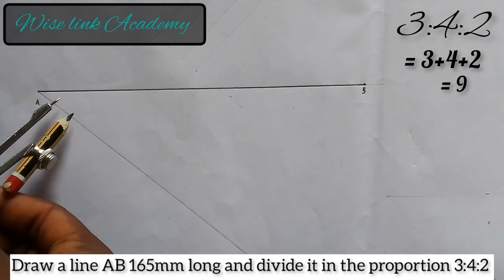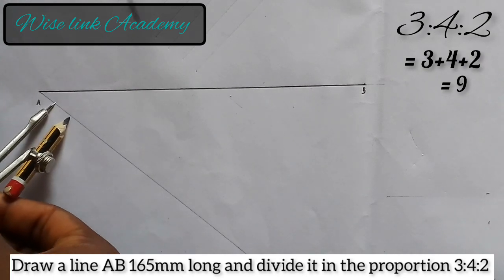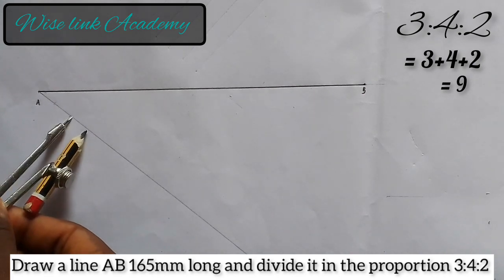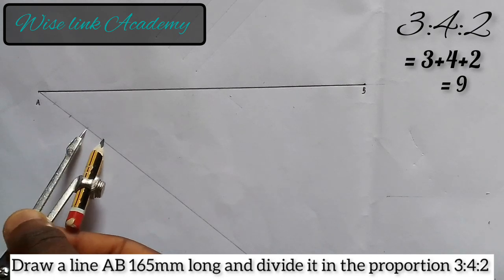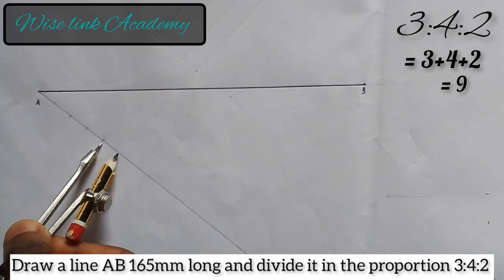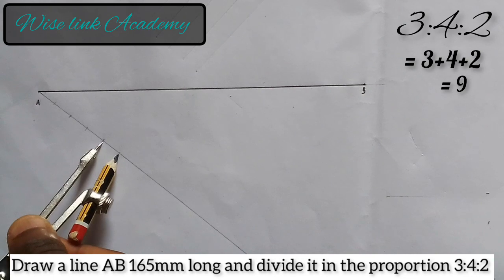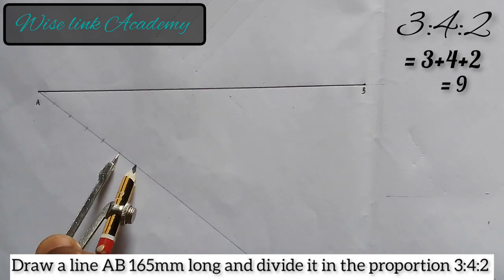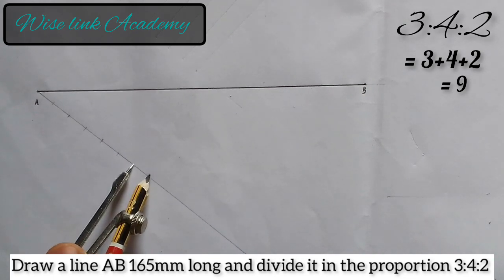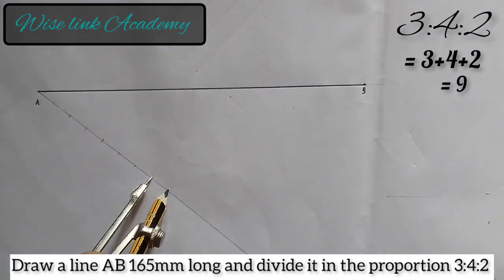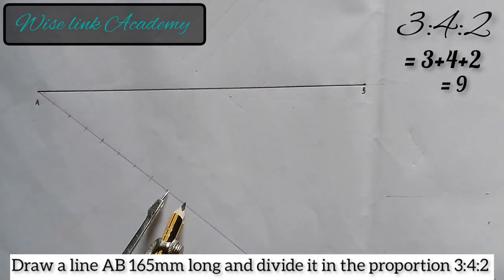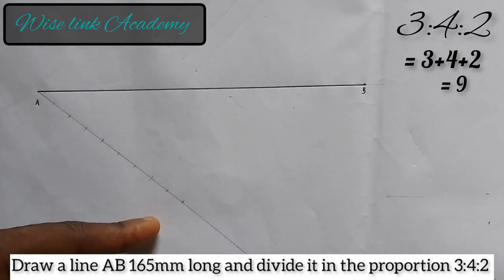1, take it at this point, 2, at this point here, 3, 4, 5, 6, 7, 8, 9. So I divide this line into 9 equal parts.